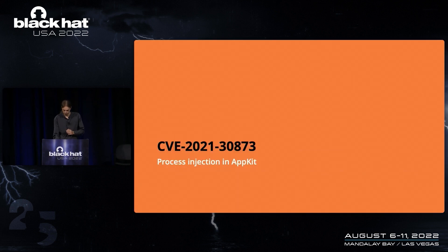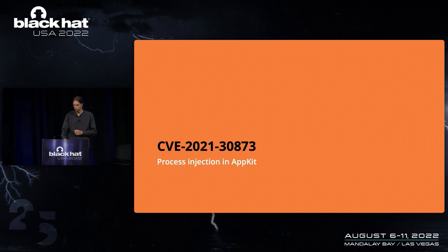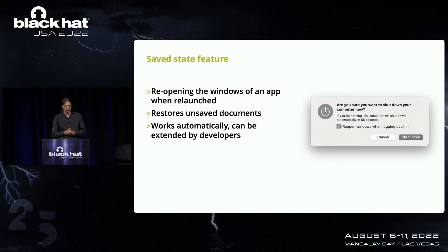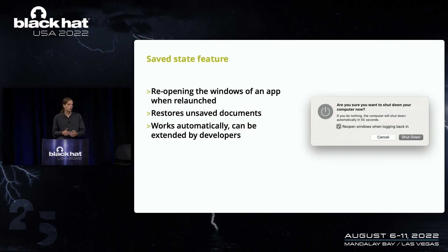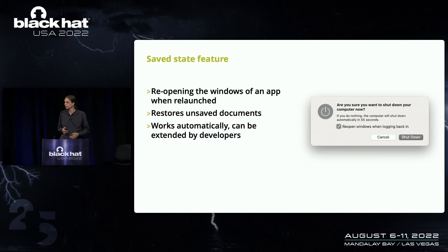And that's exactly what I found. CVE-2021-30873 is a process injection vulnerability in AppKit, which means that basically any AppKit-based application was vulnerable. The vulnerability exists in the safe state feature. When you shut down your computer, there's a checkbox to reopen open windows the next time you log in. This is known as safe state or persistent UI internally. It also recovers unsaved document content after a restart.